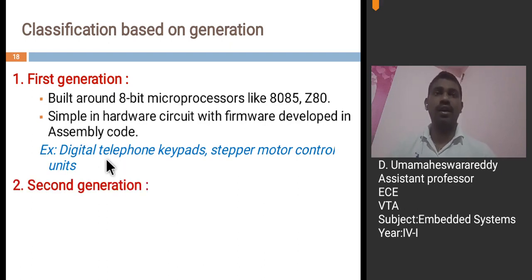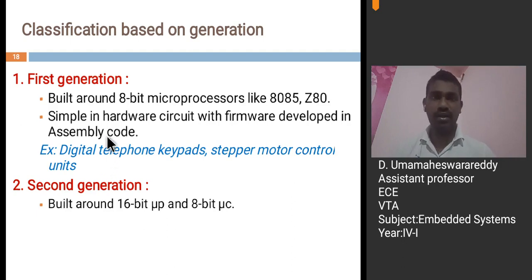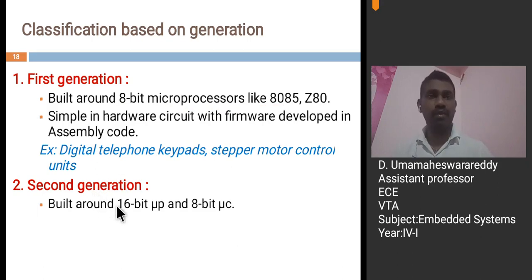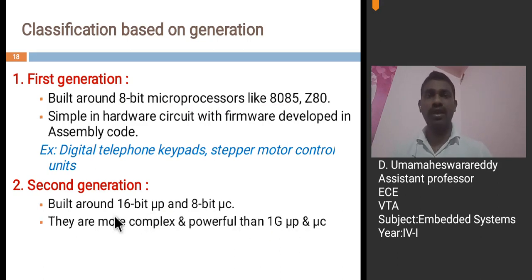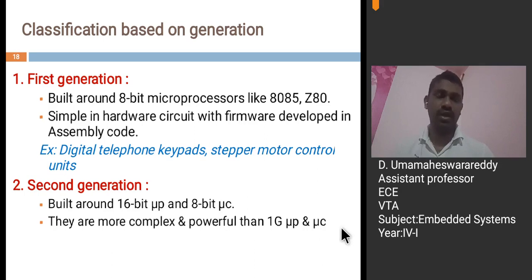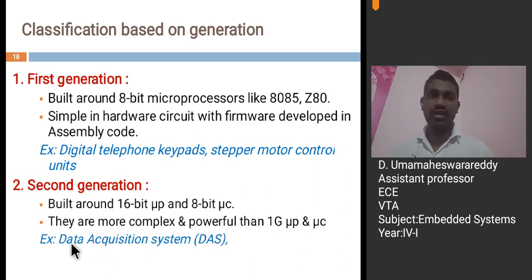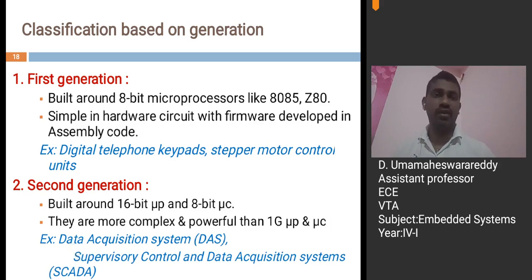Next, second generation. Coming to the second generation, they are built around 16-bit microprocessors and 8-bit microcontrollers. In the first generation, only 8-bit microprocessors were used and microcontrollers were not used. But in the second generation, 16-bit microprocessors are used and they are more complex and powerful than first generation. For example, data acquisition systems and SCADA — supervisory control and data acquisition systems — come under the second generation.